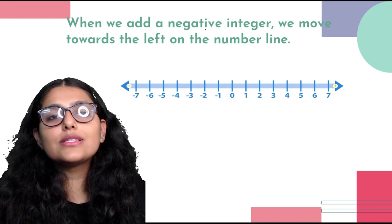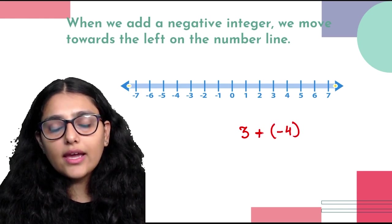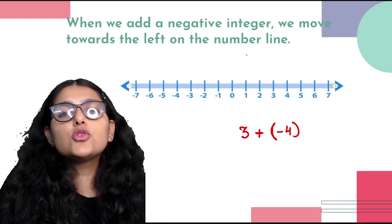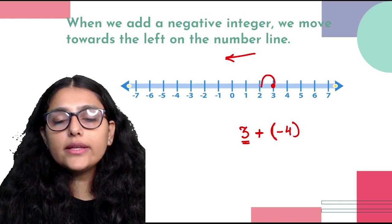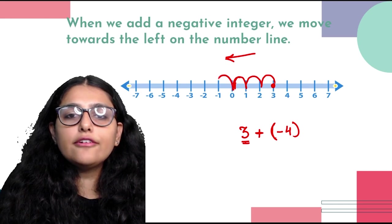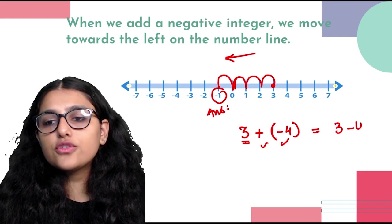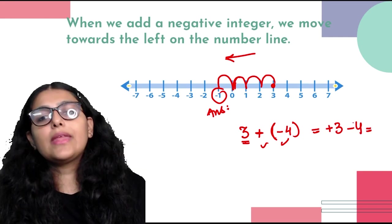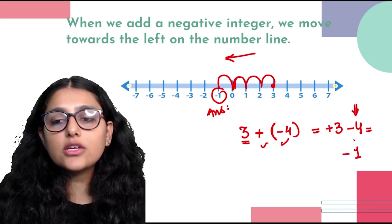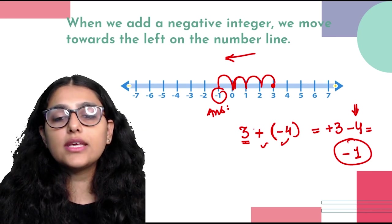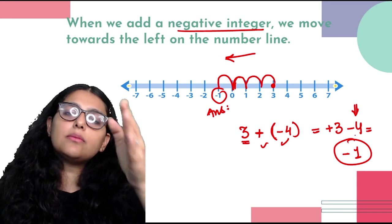When we add a negative integer, we move towards the left of the number line. For example, 3 + minus 4: start at 3, move 4 places left — ending at minus 1. Solving normally: plus minus = minus, so 3 minus 4. One positive, one negative → subtract → 4 minus 3 = 1, sign of larger number (4) is negative, so answer is minus 1. Whenever we add a negative integer, we move left — which is effectively subtraction.